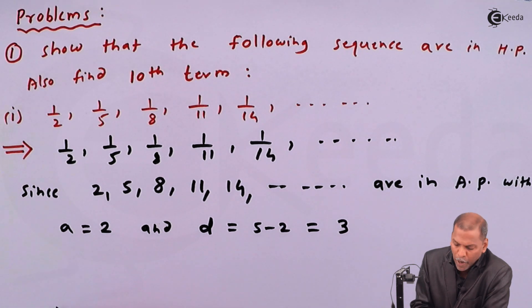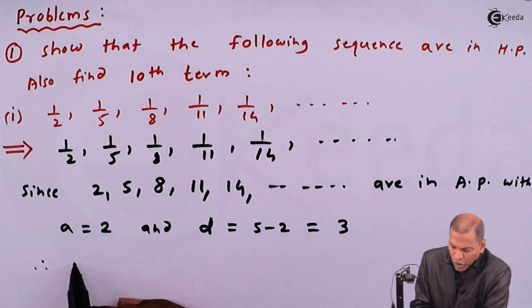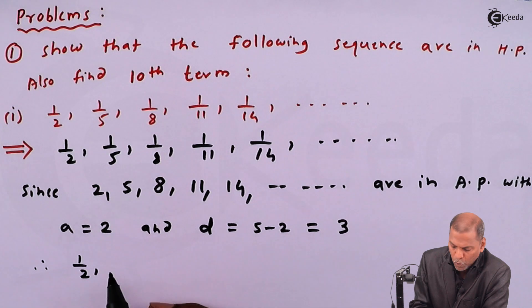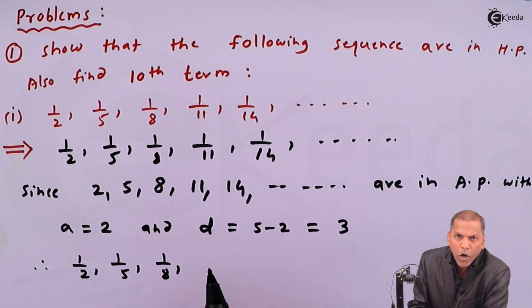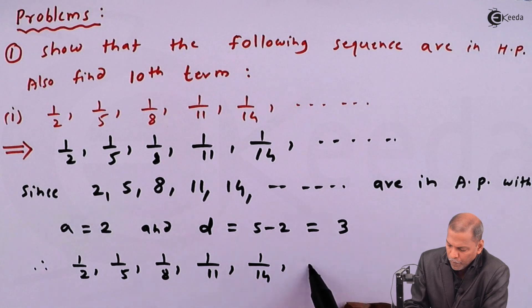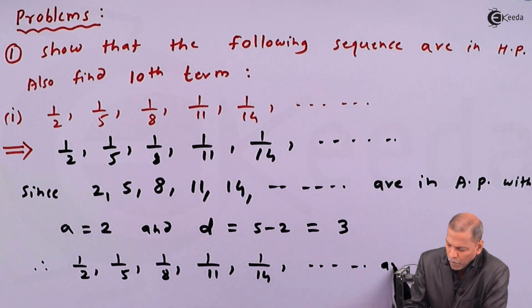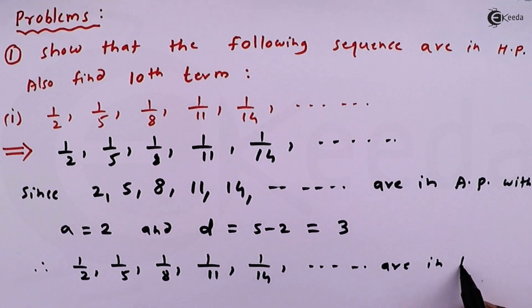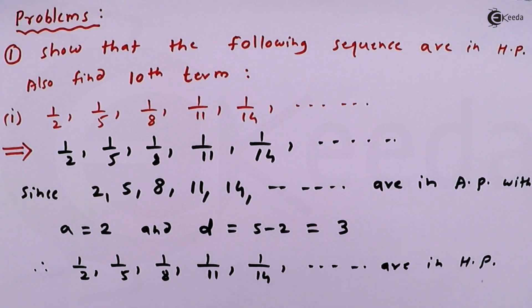And therefore, by definition, the numbers one upon two, one upon five, one upon eight, one upon 11, one upon 14 going on are in HP.